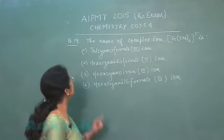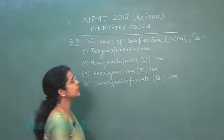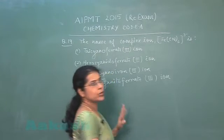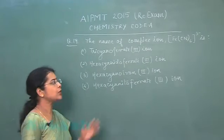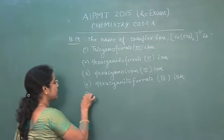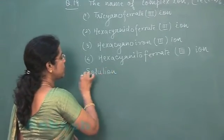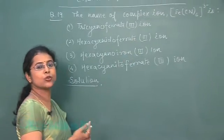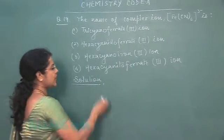So next question is question number 19. The name of complex ion structure is given [Fe(CN)6]^3- with 3 unit negative charge. Four options are given. Which one is correct option? We can find it by writing the IUPAC nomenclature of the ion. This is a complex ion. First of all we write the name of ligand - there are six cyanide ligands.